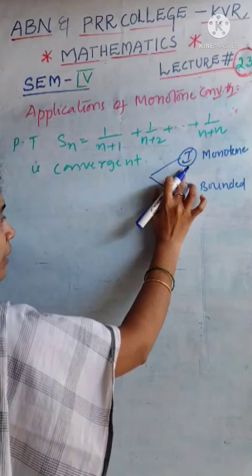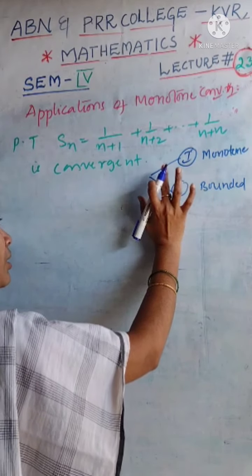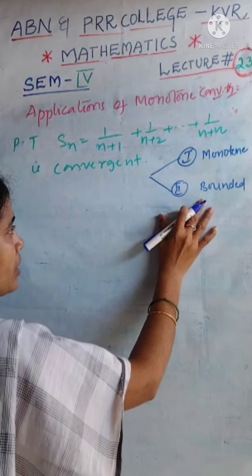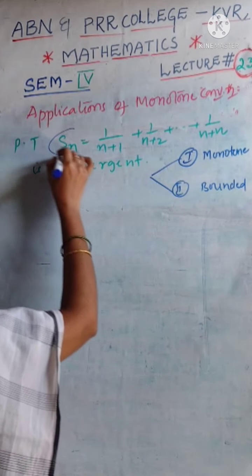In the first case, we want to prove the given sequence is a monotone sequence or not. Whether it is increasing or not, let us check. In the second case, we want to prove it is a bounded sequence.